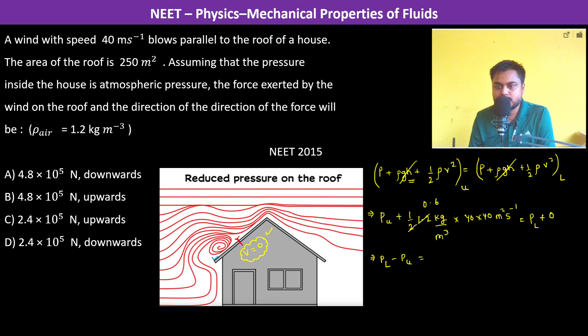So this becomes meters squared per second squared actually, because velocity squared. So 40 into 40, so 1,600 into 0.6, which is 96. So 960, and this is Newton per meter squared. So this is the pressure difference.